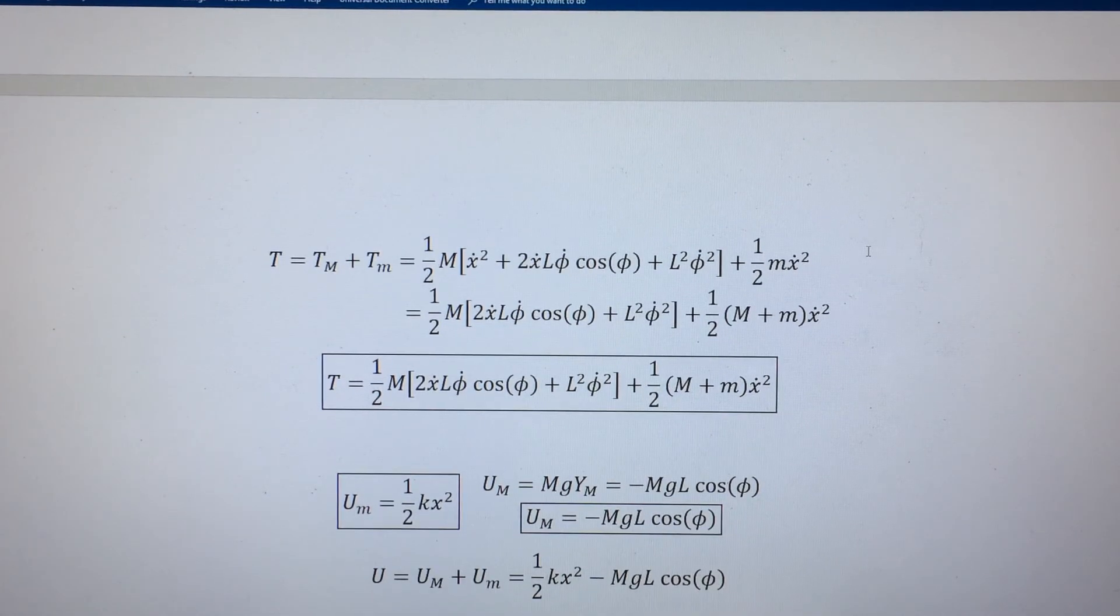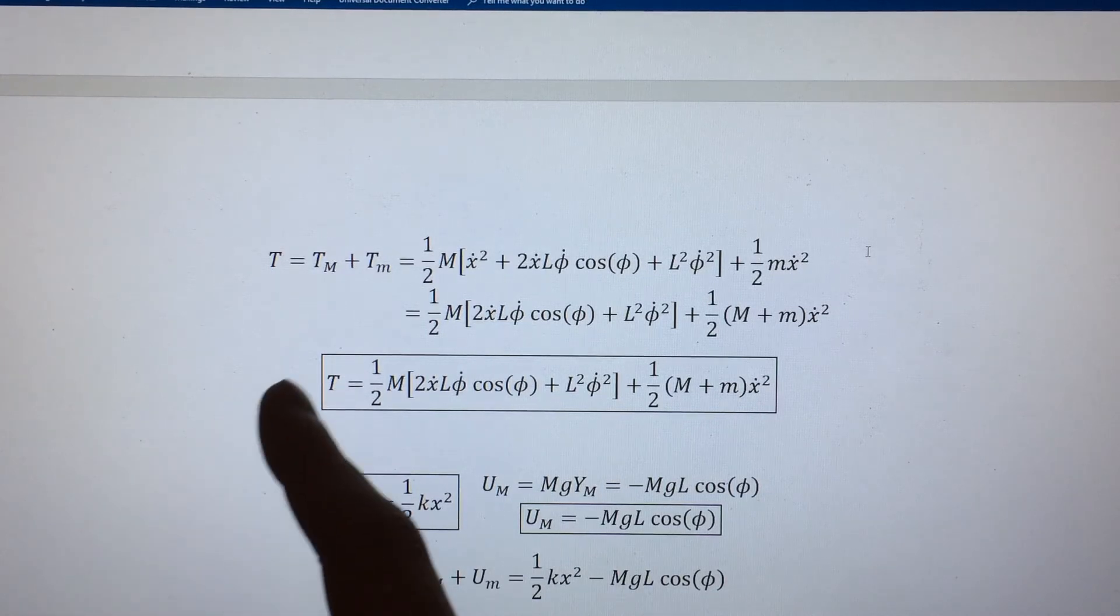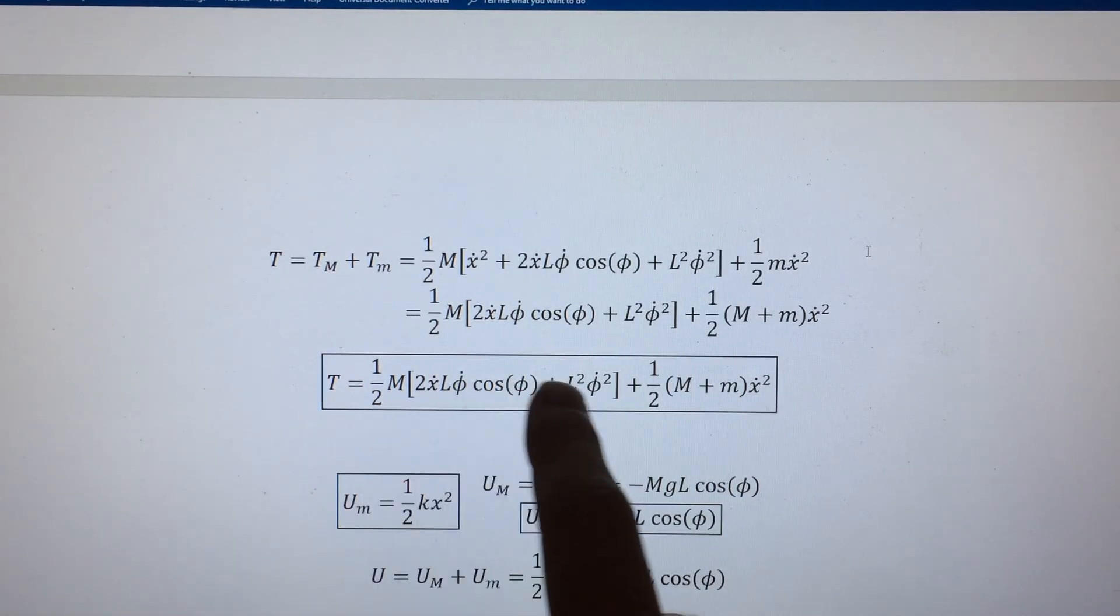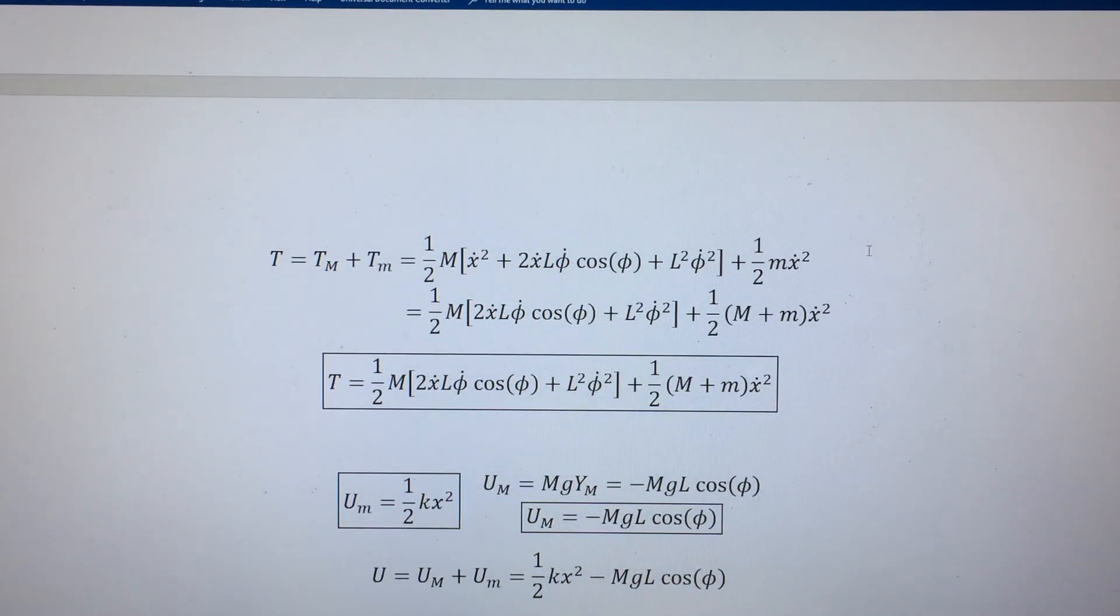The total kinetic energy, the quantity we're ultimately interested in, is just the sum of the two. Summing them and then simplifying a little bit gives us the final result for the kinetic energy that we needed.